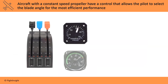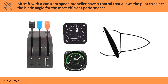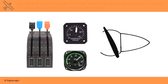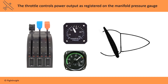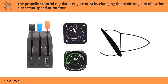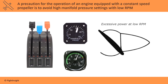Some aircraft are equipped with constant speed propellers. These aircraft have a propeller control in the cockpit along with the throttle and mixture control to allow the pilot to select the blade angle for the most efficient performance. The throttle controls power output as registered on the manifold pressure gauge. The propeller control regulates engine RPM by changing the blade angle to allow for a constant speed of rotation. A precaution is to avoid high manifold pressure settings with low RPM.